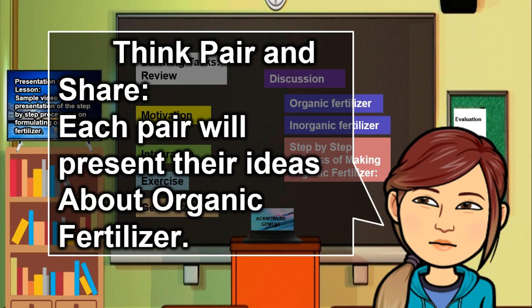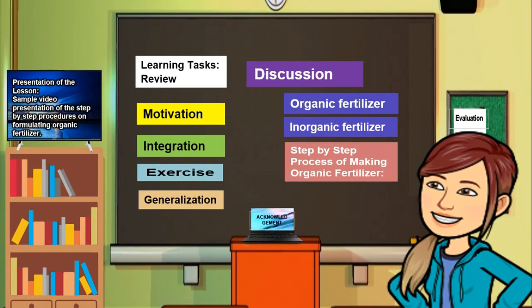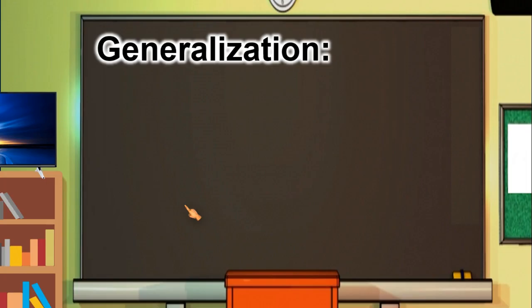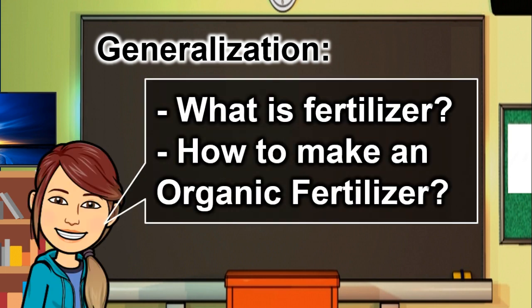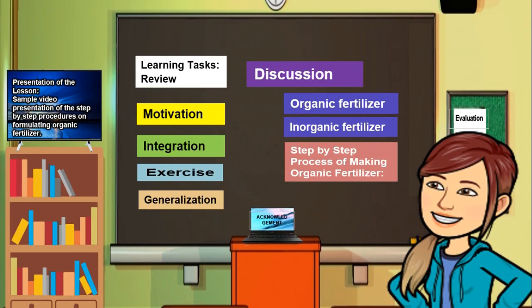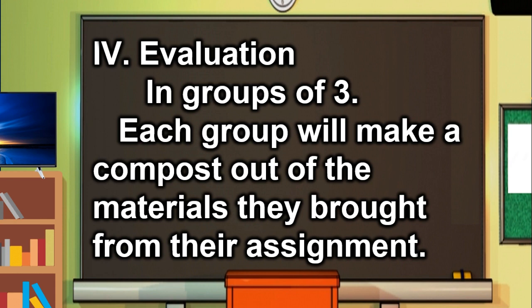Exercise — Think, pair, and share: each pair will present their ideas about organic fertilizer. Generalization: What is fertilizer? How do you make an organic fertilizer? Evaluation: in groups of three, each group will make a compost out of the materials they brought from their assignment.